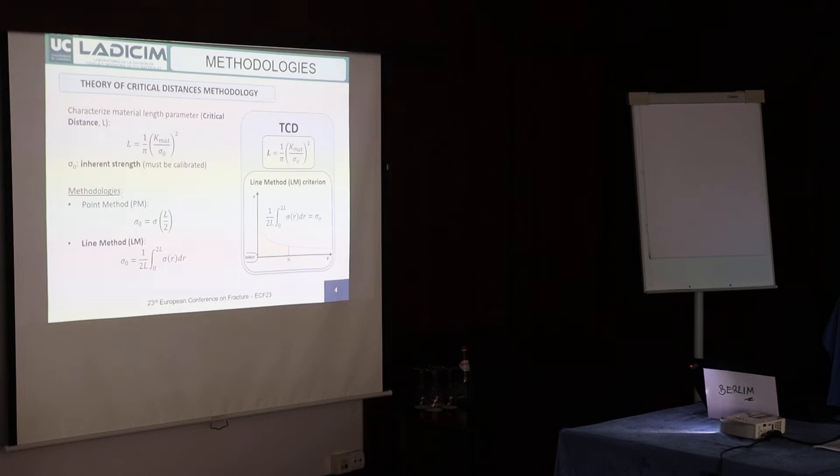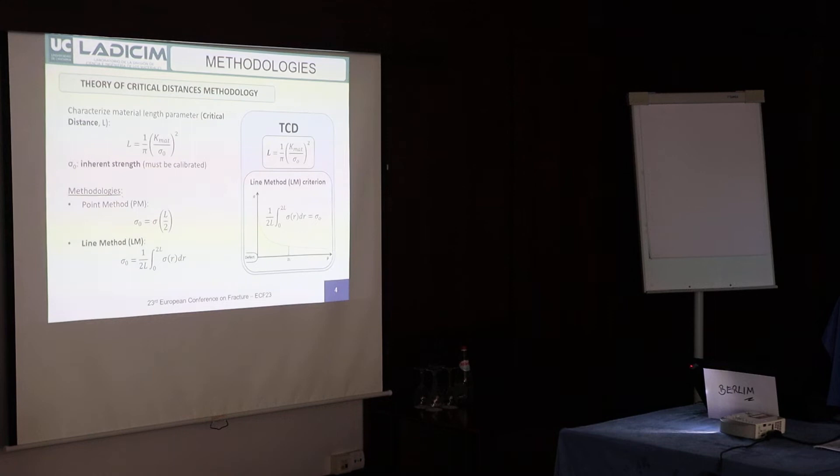We have the Theory of Critical Distance, which is a well-known approach to study notches. In this case, we have two parameters: the critical distance and the inherent strength. With one of them we can obtain the other. We need to perform a calibration to get the inherent strength, and in this case we use the line method.